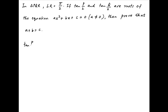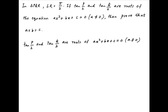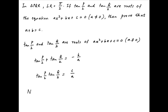We are given that tan(p/2) and tan(q/2) are roots of the equation ax² + bx + c = 0, where a ≠ 0. Therefore, the sum of the roots — tan(p/2) + tan(q/2) — is equal to -b/a, and the product of the roots — tan(p/2) × tan(q/2) — is equal to c/a.